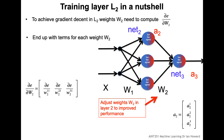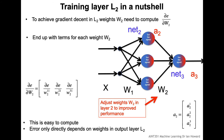Updating the weights in W2 is very easy to do — it's just like we've been doing before with a single linear network. The only difference is we're not considering x data coming in directly; we're looking at the activations from the network below and using them as the effective input to the second network. So we use the same update rule but with a2 transpose instead of x transpose.